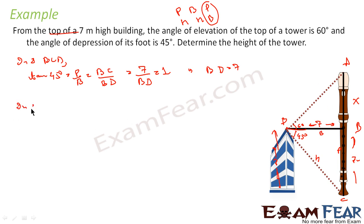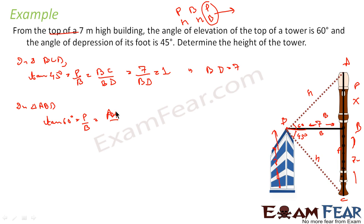Now in triangle ABD, with the 60° angle as the frame of reference, the perpendicular is AB = x and the base is BD = 7. Using tan 60° = P/B = x/7, and since tan 60° = √3, we get x = 7√3.